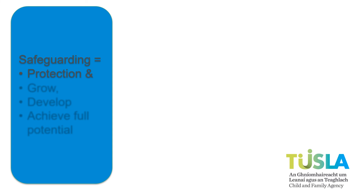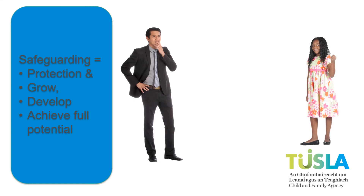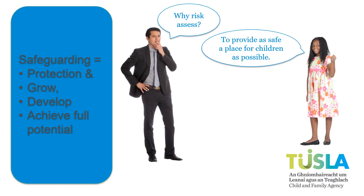While protecting children from abuse is one part of safeguarding, children and young people also need safeguarding in order for them to grow, develop, and achieve their full potential. Your CSS and its risk assessment are there to help support the best possible outcomes for the children and young people in your care. Remember, the Children First Act 2015 does not require you to use any particular method to carry out your risk assessment — it only requires that you do. The purpose of the risk assessment is to help you provide as safe a place for children as possible.